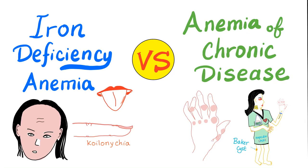Hey, it's Medicosis Perfectionarius, where medicine makes perfect sense. Today we'll talk about the difference between iron deficiency anemia and anemia of chronic disease. Iron deficiency anemia is the anemia you have when you bleed, such as a GI bleed or after a car accident. Anemia of chronic disease, or chronic inflammation, occurs after chronic inflammation, such as the famous rheumatoid arthritis.